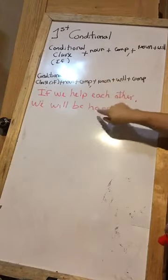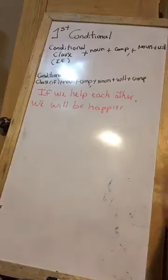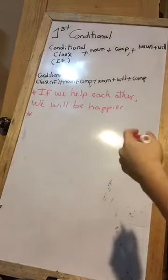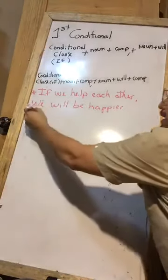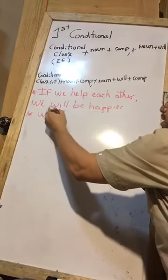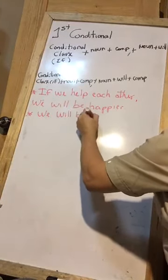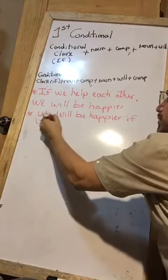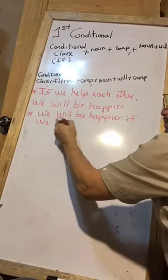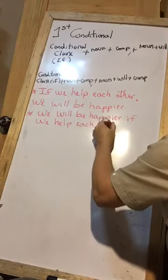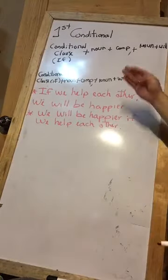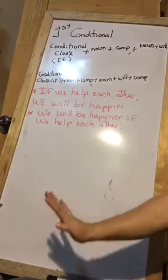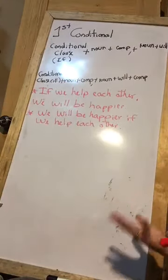Now we do the opposite — starting with will instead of if. We write: 'We will be happier if we help each other.' In both versions it's the same sentence; in one you give the condition first, and in the other you start with what will happen.